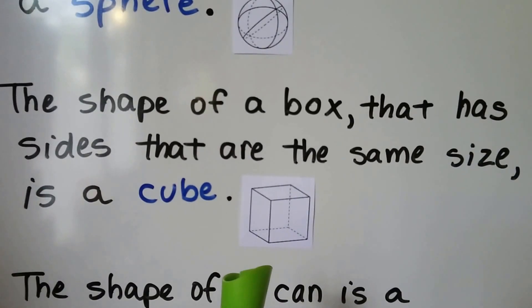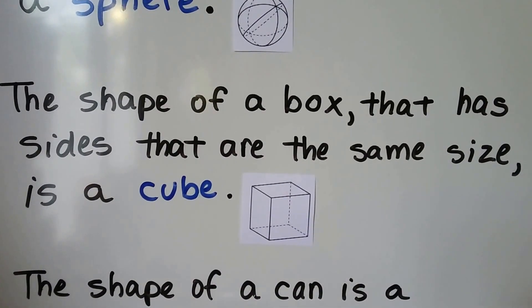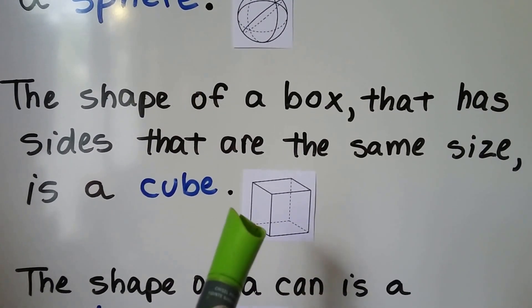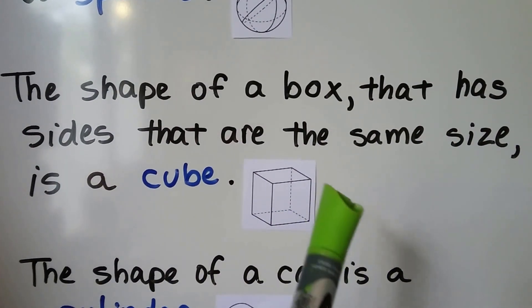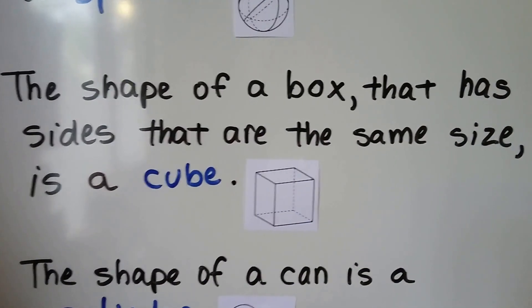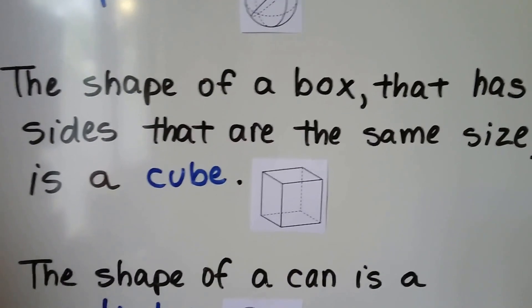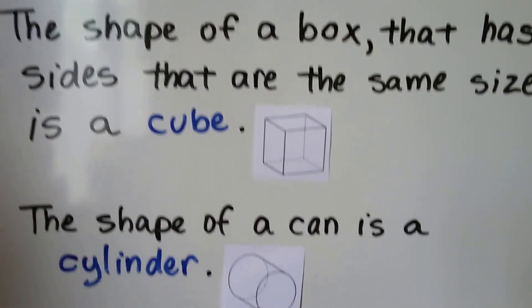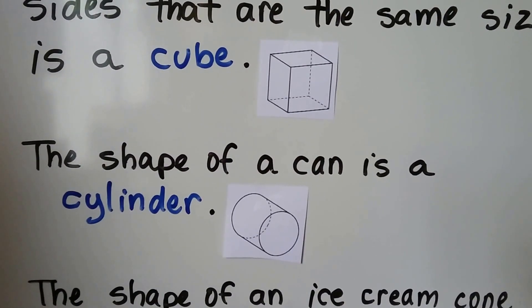The shape of a box has sides that are the same size — this is a cube. That side is the same size as that side, and the same as the other one, and the top and the bottom are all the same size. It makes a cube.